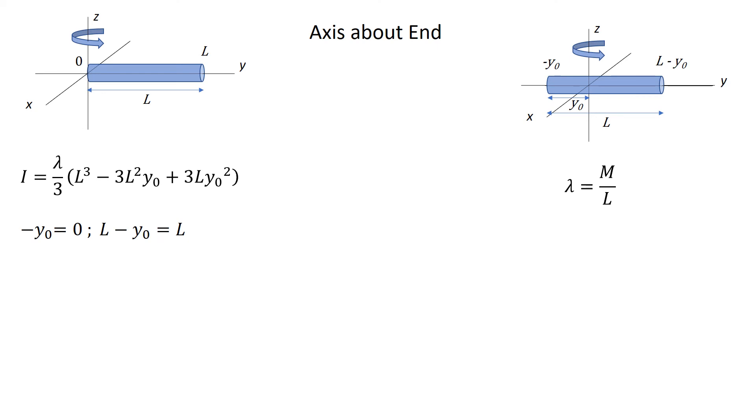From before we have the form of the moment of inertia, and if we look at the image in the top right corner I'm just setting y0 to be zero, and because of that L minus y0 is just L. So starting from our previous result we can just plug that in, all the terms with y0 go to zero, and we're just left with lambda over 3 times L cubed.